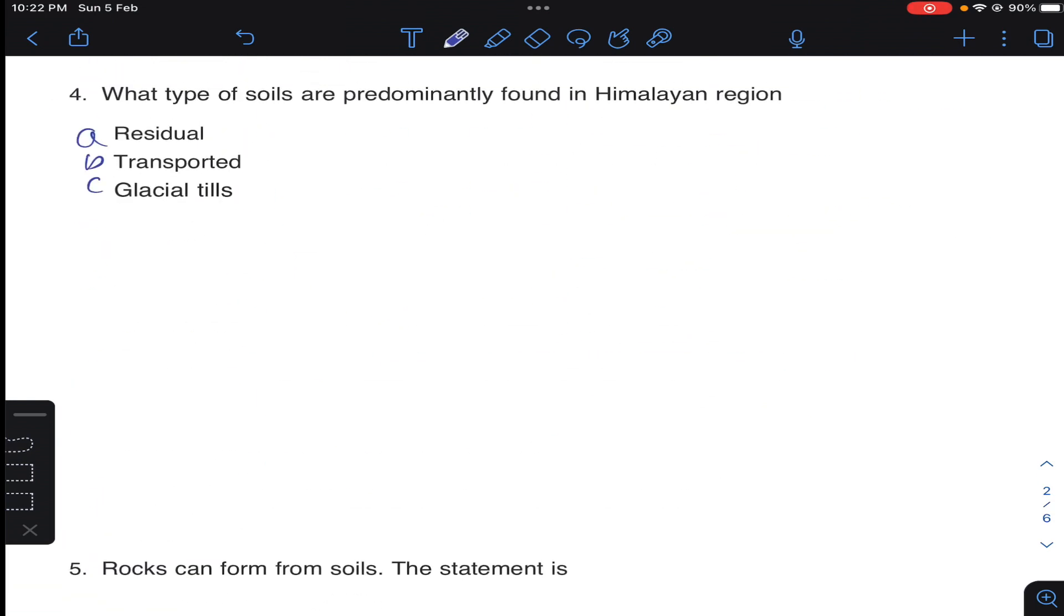Question number four: what type of soils are predominantly found in Himalaya region? So Himalaya region is a hilly region and many rivers are originating from Himalayas.